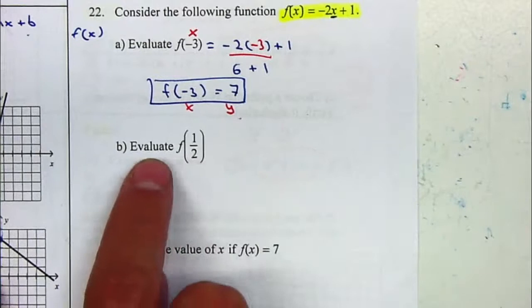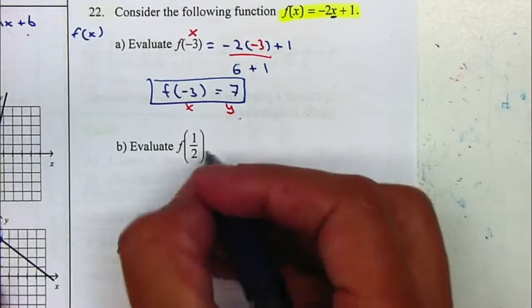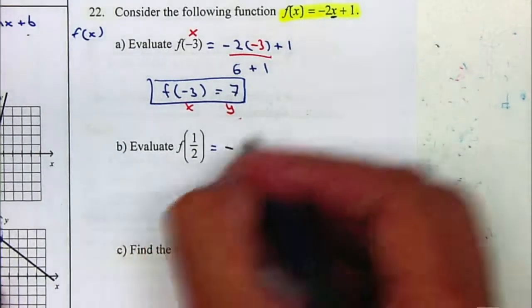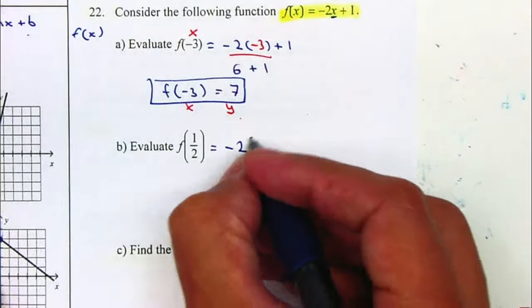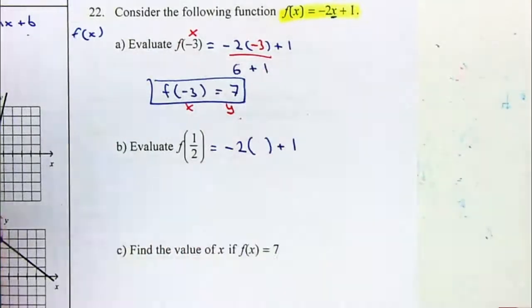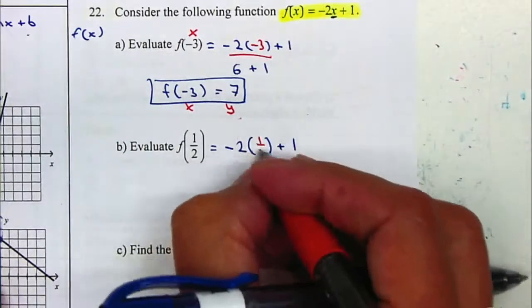For letter b, evaluate f of 1 half. So I'm going to take the equation, negative 2x plus 1. Instead of the x, I'm going to plug in a 1 half.